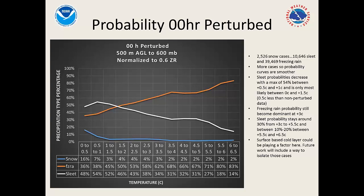Freezing rain became dominant above plus 3°C and stayed around 30% from plus 3 all the way to plus 5.5°C. Some sleet probability at very warm temperatures could be due to a surface-based cold layer. An interesting finding is that the sleet probabilities actually decreased when perturbed, which may suggest that models sometimes miss a narrow warm layer — so when you account for that uncertainty, sleet probability is a little lower because the model may have been underestimating the warm air in a narrow layer.